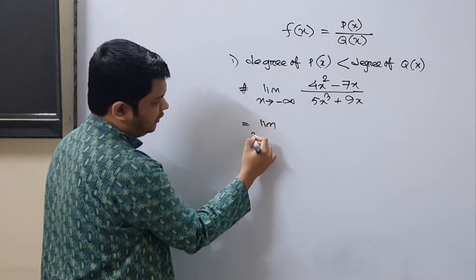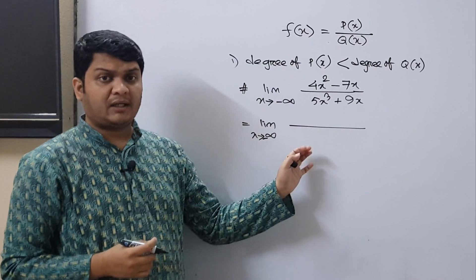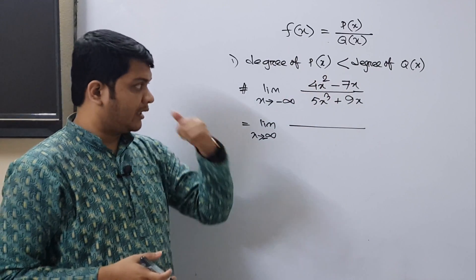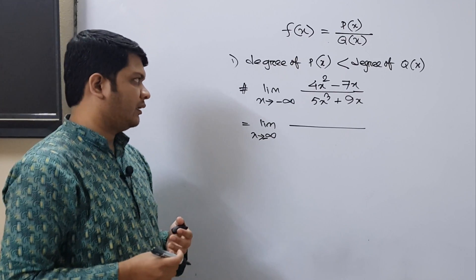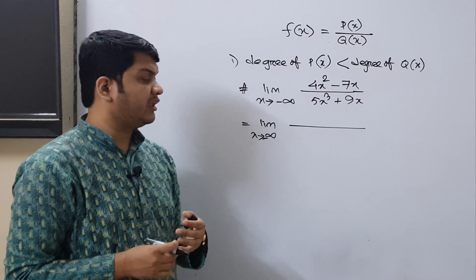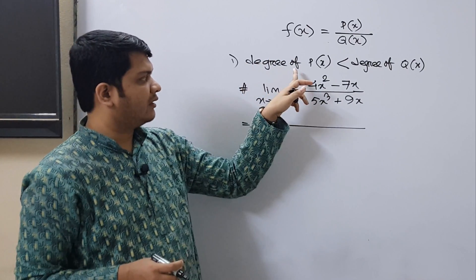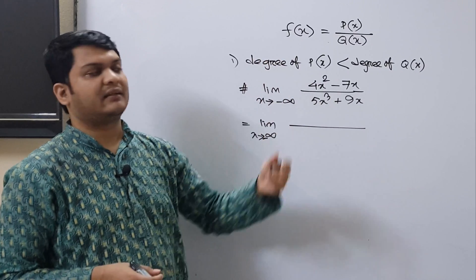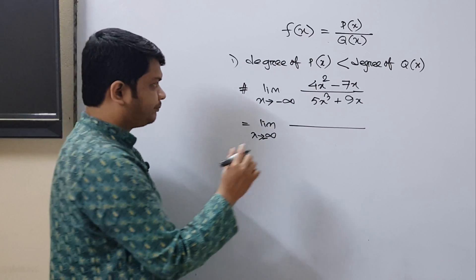Let's solve this problem with x tending to negative infinity. We repeat the same approach: divide all terms by the maximum power present in the numerator. Why the numerator? It's not that we always divide by the numerator's degree — we divide by whichever degree is less. In this case, the degree of p(x) is less than that of q(x), so we use the degree of the numerator.